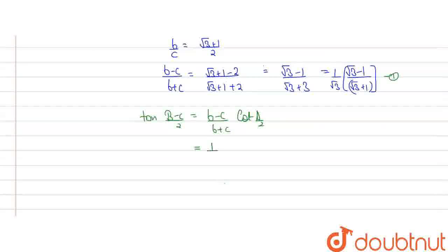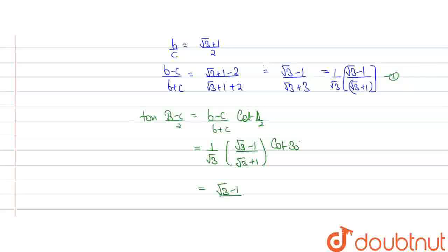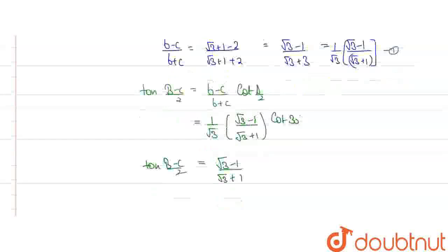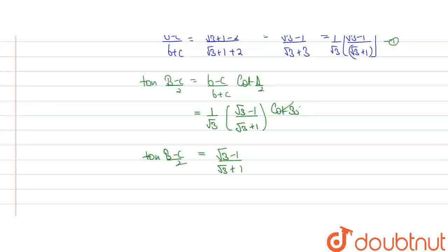This is equal to (1/√3) × (√3 - 1)/(√3 + 1) × cot(A/2), which is cot(A/2) = cot(30°). Further solving, we get (√3 - 1)/(√3 + 1), which equals tan((B - C)/2), since cot(30°) equals √3 and the √3 terms cancel out.